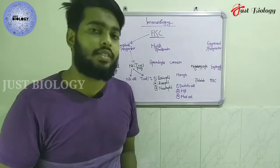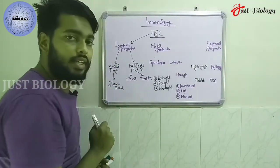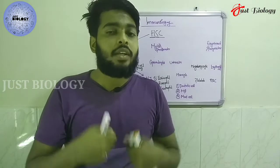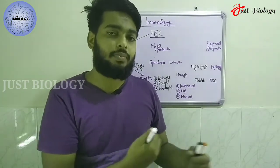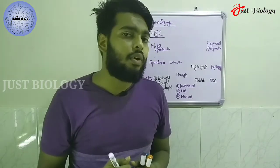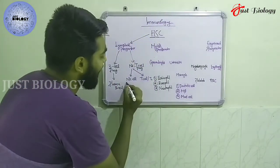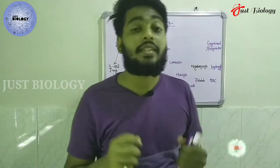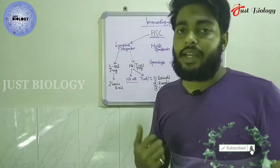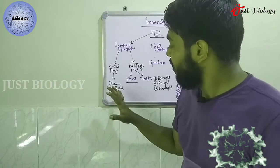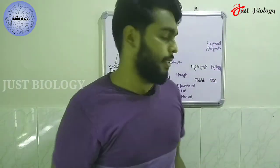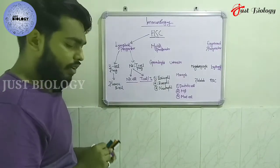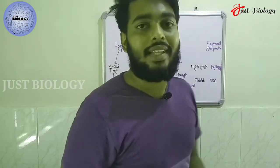NK cells are cells which act against cancer or some viral-infected cells — that's why they are referred to as natural killer cells. Whenever a pathogen enters inside the body, the body will give some sort of chemical response to the immune system. That chemical response will be identified by the NK cells, which then come into action and secrete some kind of chemical substances called chemokines. Those chemokines will degrade the cells affected by either cancer or a virus.